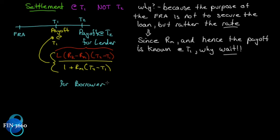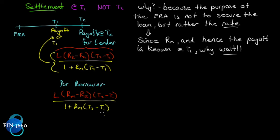For the borrower, it's the same structure, but the sign is reversed. The borrower believes the market rate will be greater than the contract rate for the same period of time, and that payoff is also discounted back by one plus rm times t2 minus t1. Notice that if the lender's payoff is positive, the borrower's is negative — the two sum to zero.